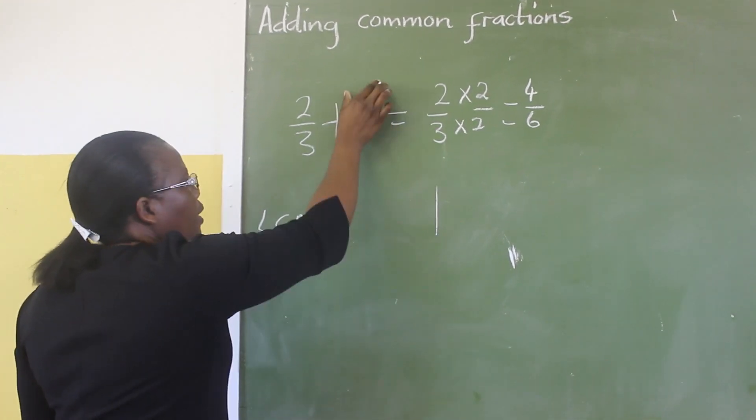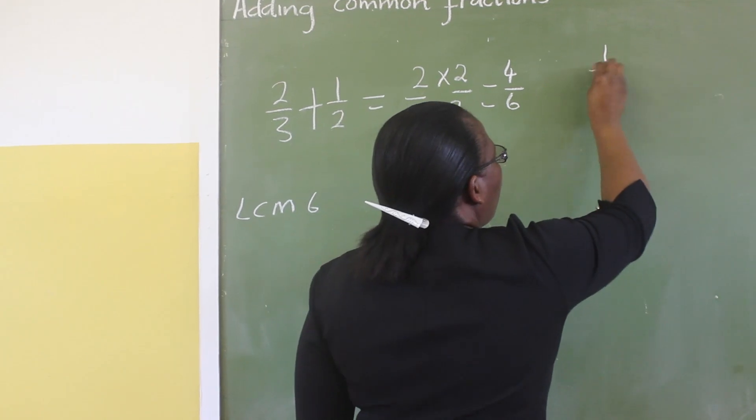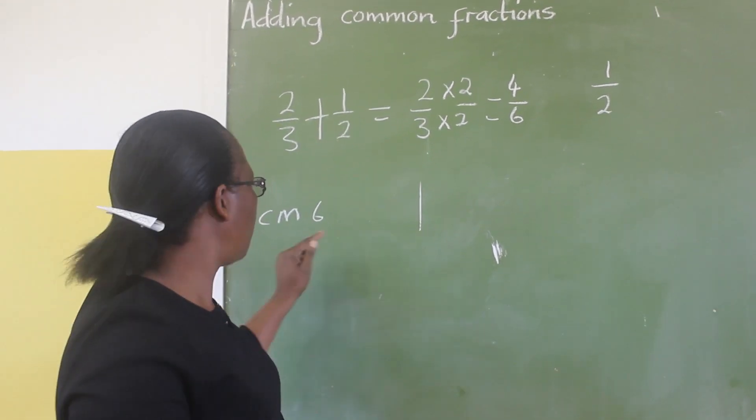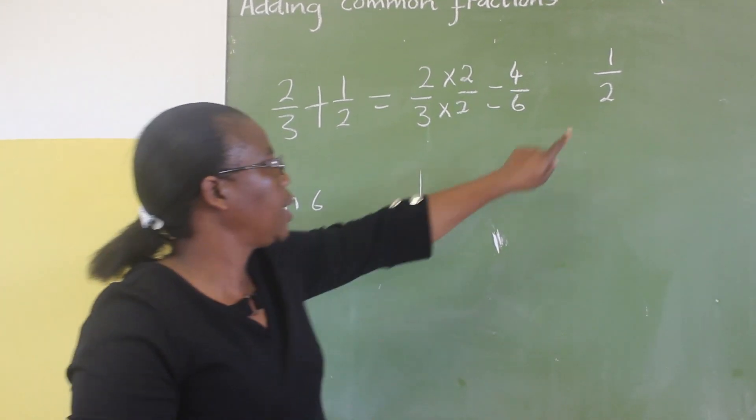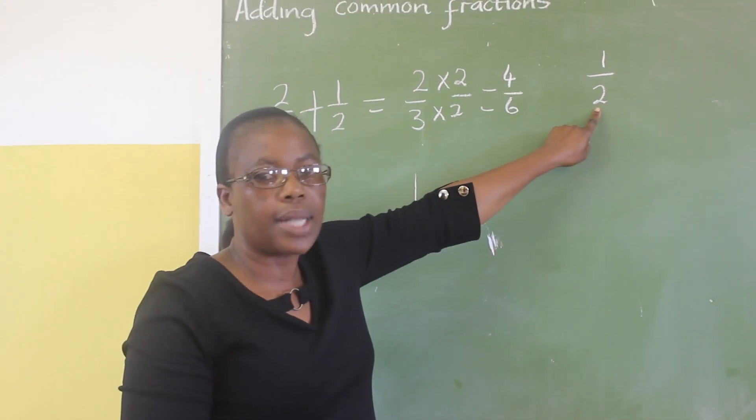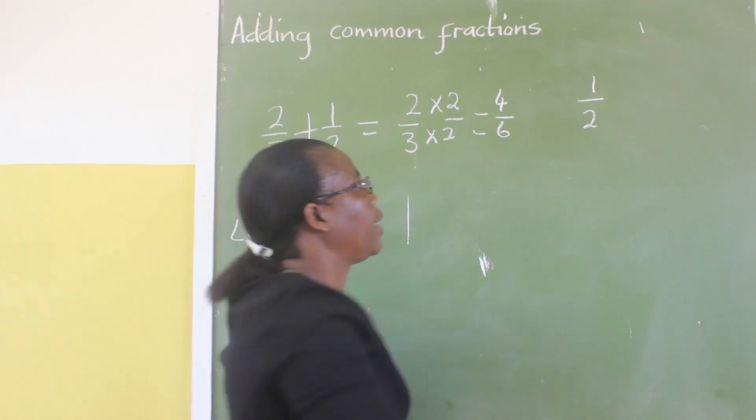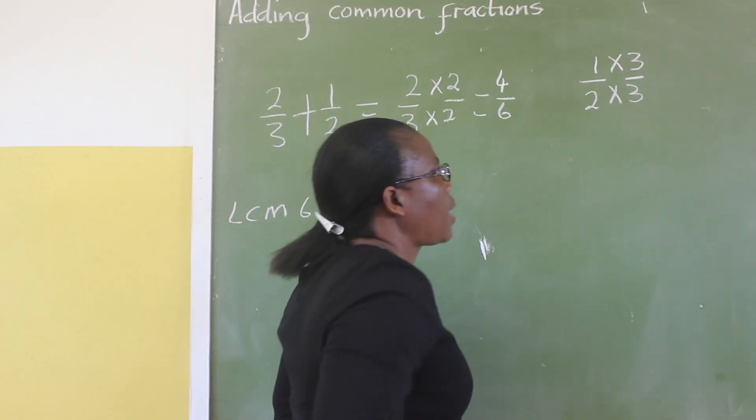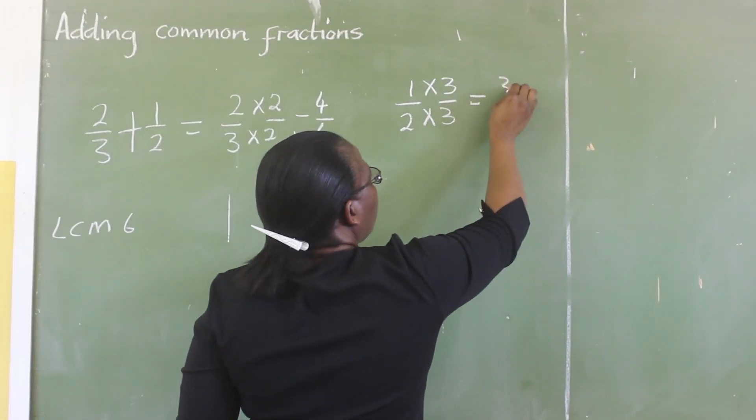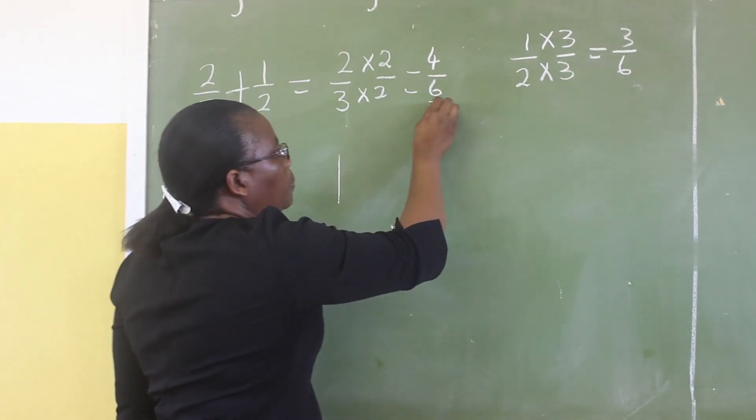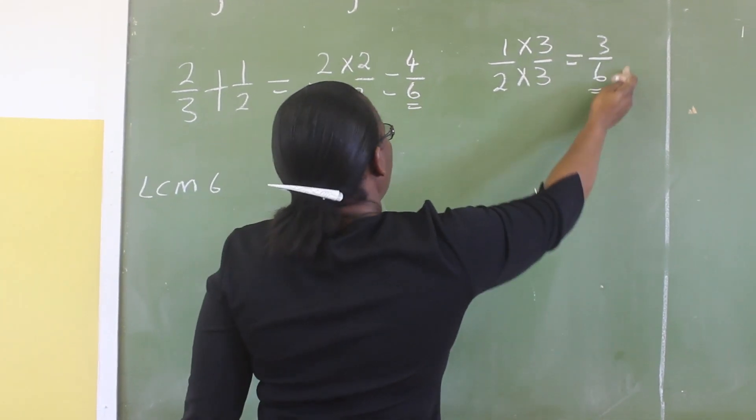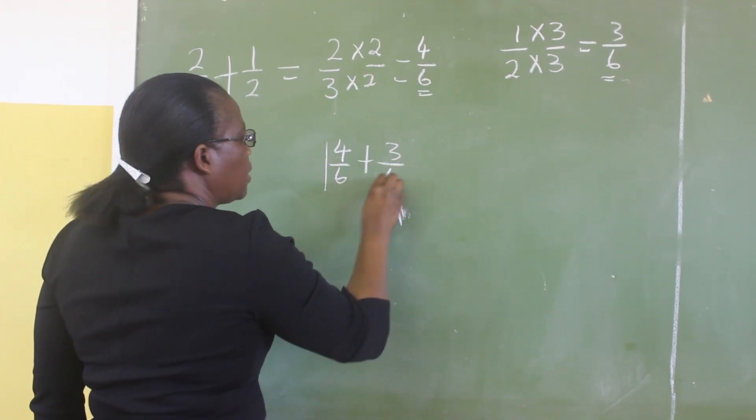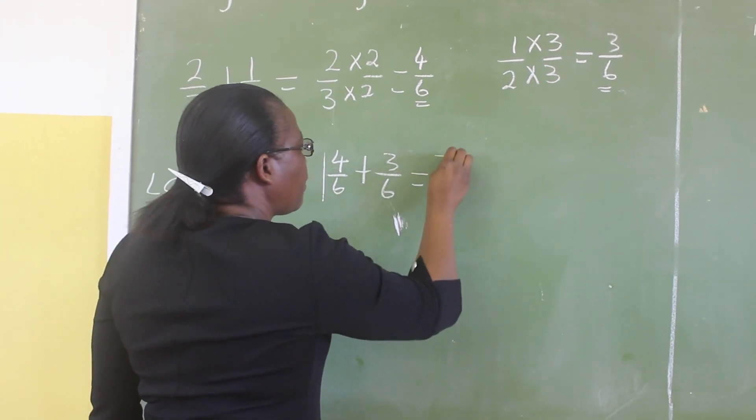Then we take this other fraction, 1 half. We want to change this denominator to 6. We are dividing this common multiple by this denominator, and we get 3. So we are multiplying 3 by the numerator and 3 by the denominator, and the answer is 3 over 6. Now, we are having 4 over 6 plus 3 over 6. And the answer is 7 over 6.